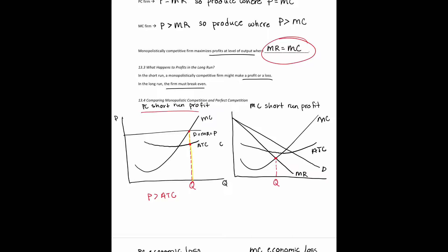For the MC firm, that intersection point does not directly tell us the price. To determine the price, we go straight up to where the demand curve is, then stay on the sidewalk and go straight over — that gives us the price. We then locate the average total cost at that profit maximizing quantity by staying on the sidewalk to find cost. In both the PC and MC cases here, price is greater than average total cost, so there is a short-run profit.